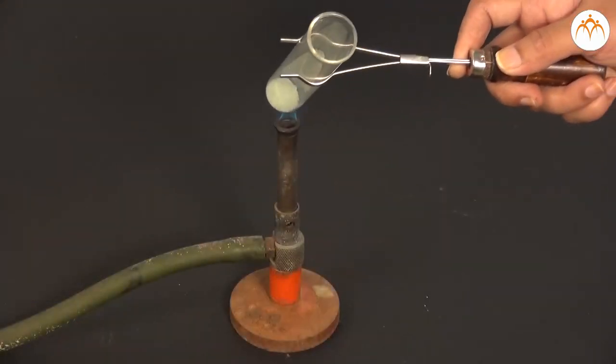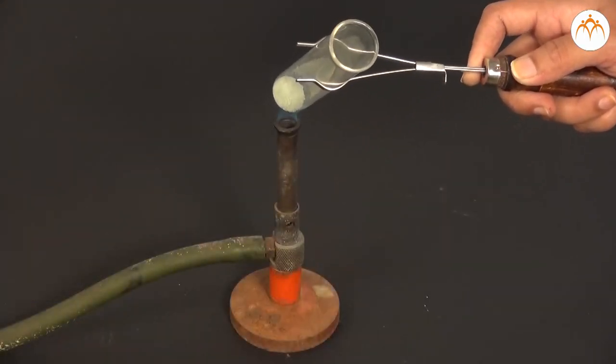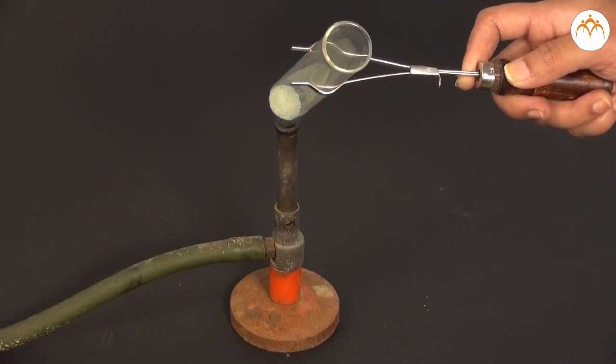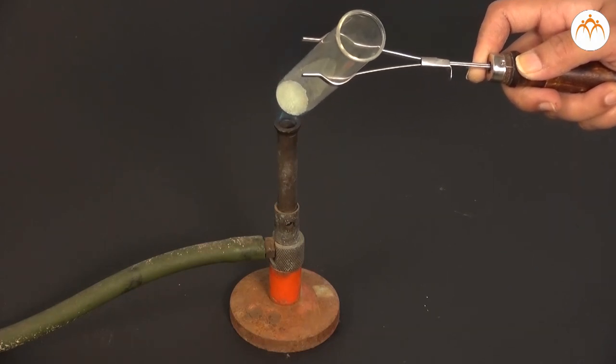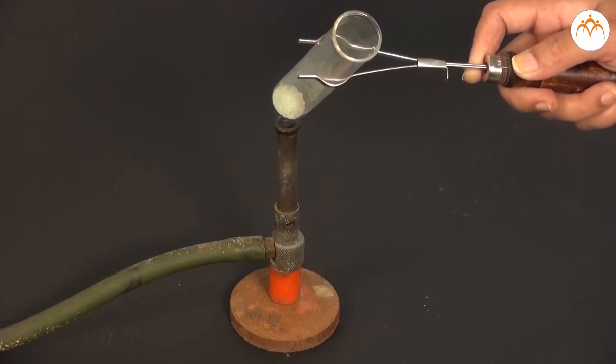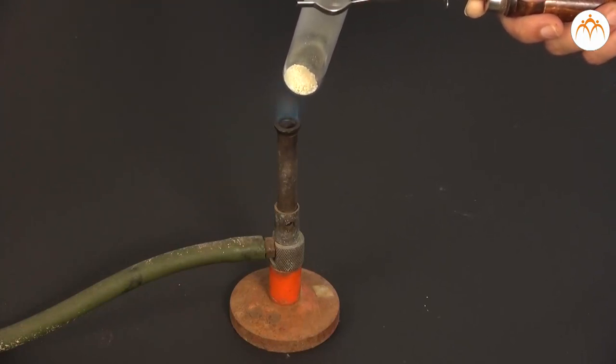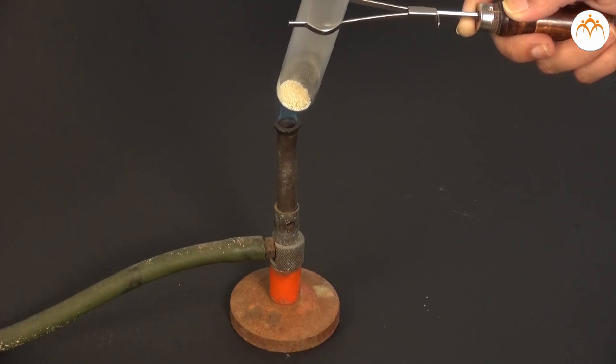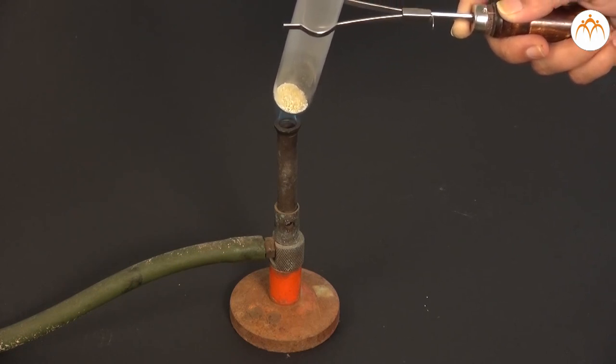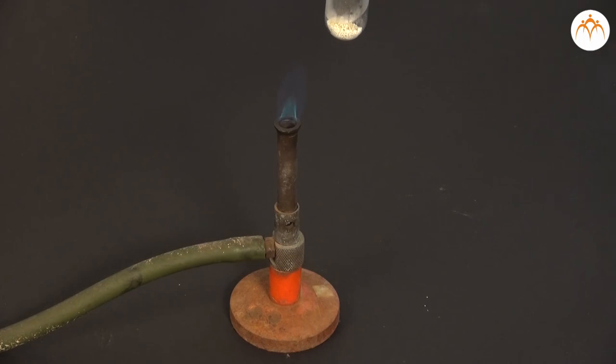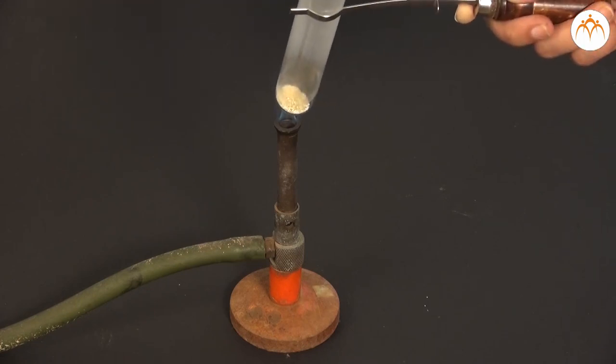Then we clamp the test tube to a stand and heat it with a burner or spirit lamp for 10 minutes. We note the changes in colour of the substance in the test tube. Then we keep the hot test tube on an asbestos sheet and observe the colour of the substance after cooling.